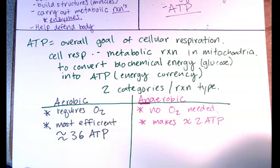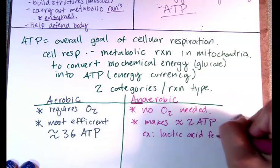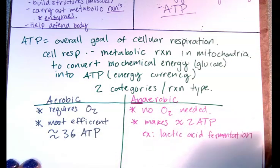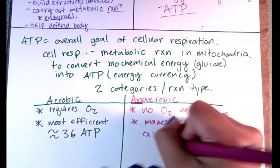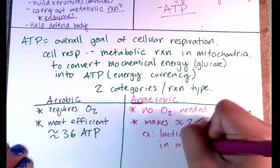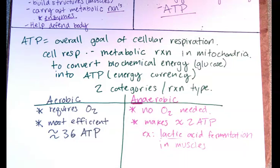An example of anaerobic respiration you might be familiar with is lactic acid fermentation. If you're working out really hard, eventually your muscles start to run out of oxygen and have to start doing lactic acid fermentation. You've heard of lactic acid buildup — that's one of the reasons you end up sore, because there's a buildup of that acid when your muscles resort to this type of cellular respiration. That's the first part of the biochemistry review — let me know if you have any questions.